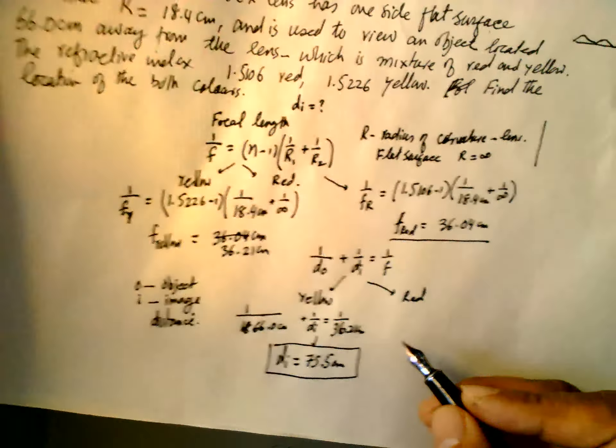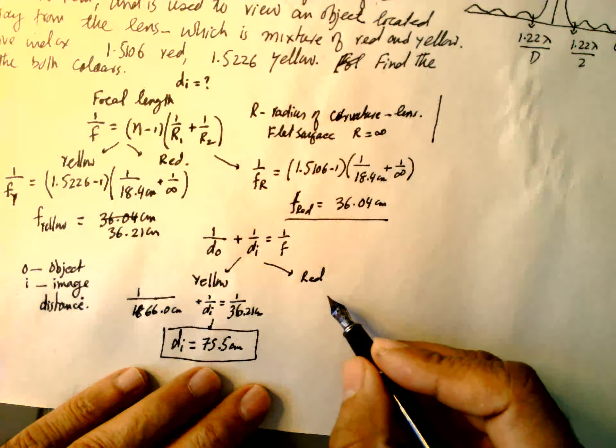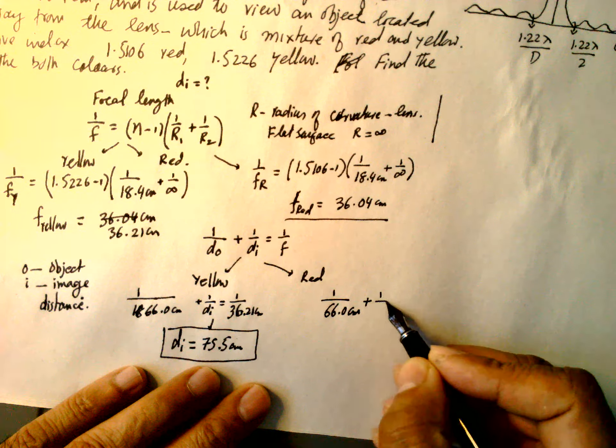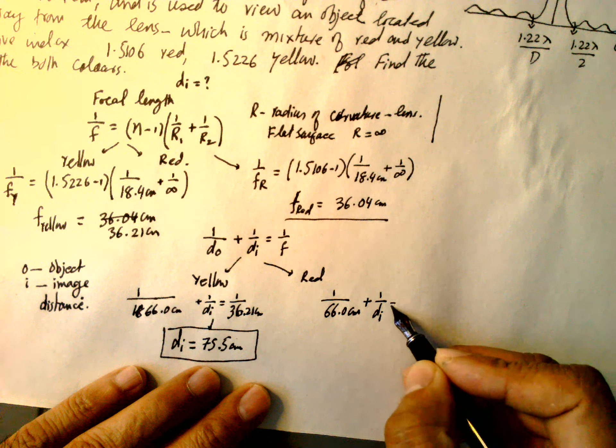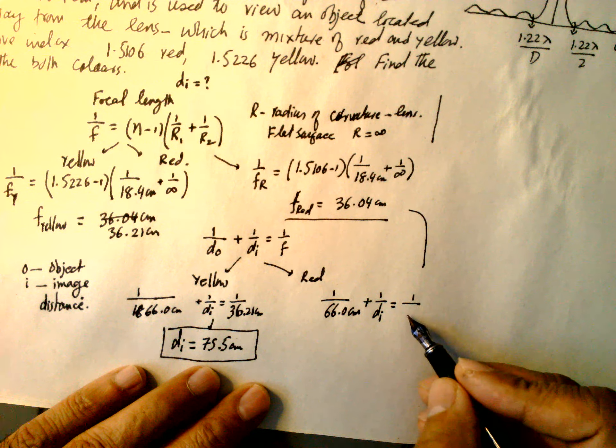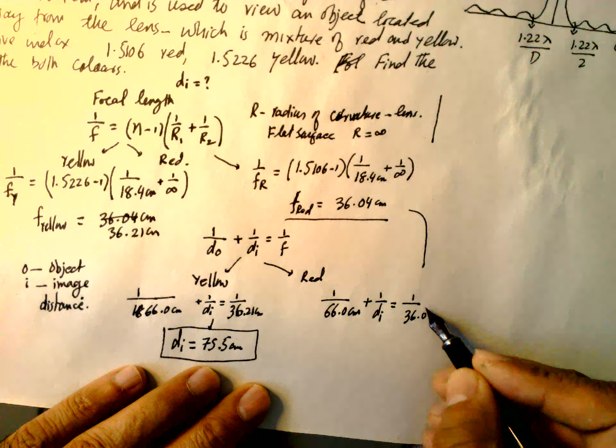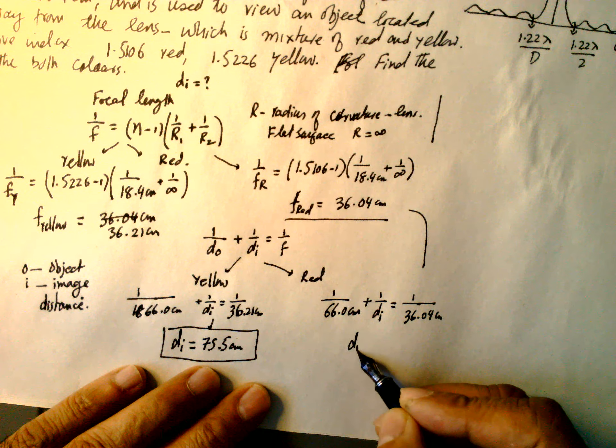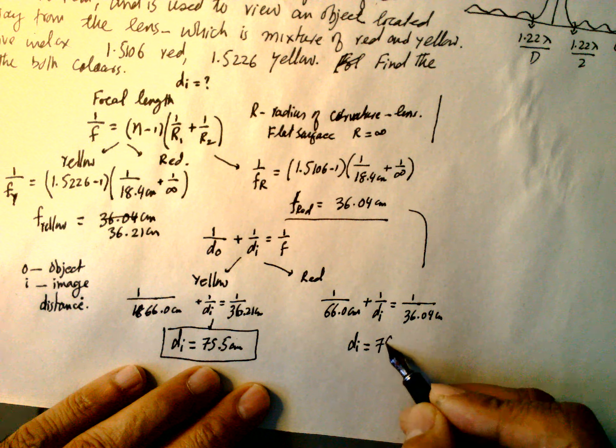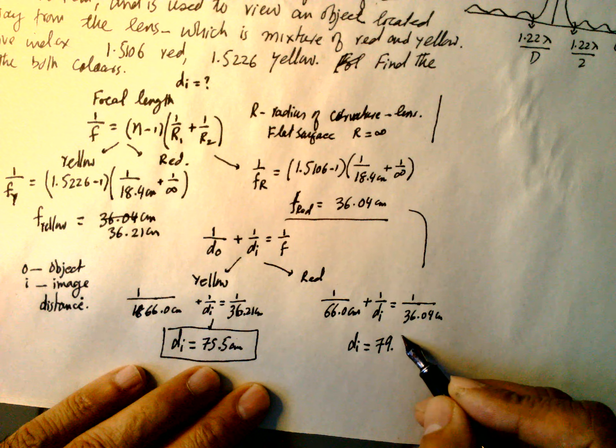And for the red one, 1/66.0 cm + 1/d_i = 1/focal length of red, which is equal to 36.04 cm. So d_i is equal to 79.4 cm.